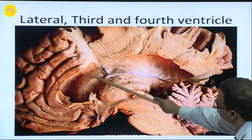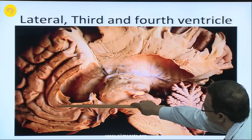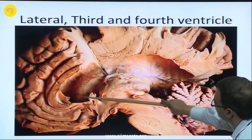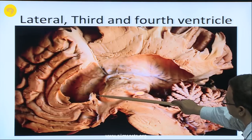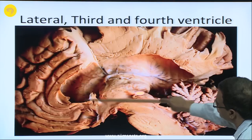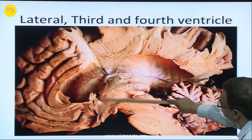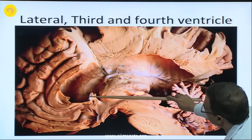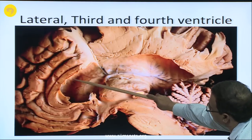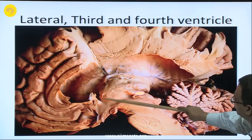This portion is the anterior horn of the lateral ventricle. Here is the genu — the genu forms the anterior boundary of the anterior horn — and the posterior boundary is near the interventricular foramen. The head of the caudate nucleus is here, forming the lateral boundary of the anterior horn. On the medial side lies the septum pellucidum, which has been damaged; the medial wall of the anterior horn is formed by the septum pellucidum.